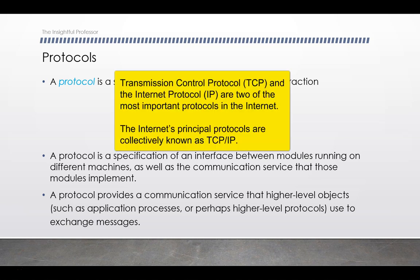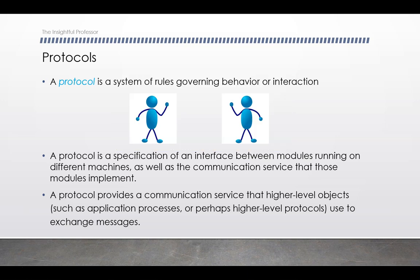The Transmission Control Protocol, or TCP, and the Internet Protocol, or IP, are two of the most important protocols in the internet. The IP specifies the format of the packets that are sent and received among routers and end systems. The internet's principal protocols are collectively known as TCP/IP. Given the importance of protocols to the internet, it's important that everyone agree on what each and every protocol does, so that people can create systems and products that interoperate.